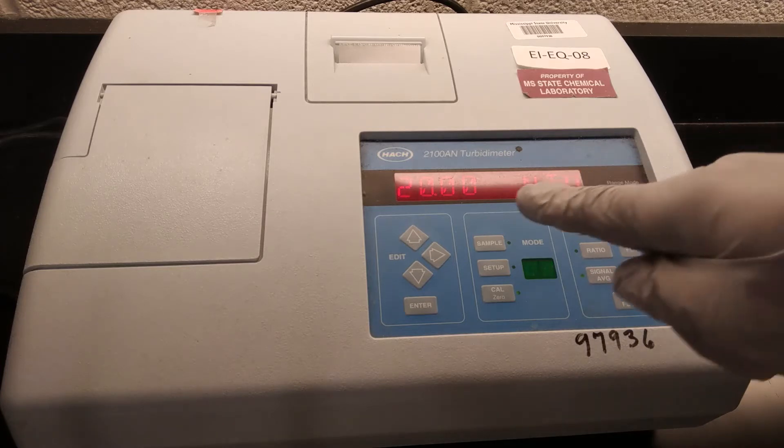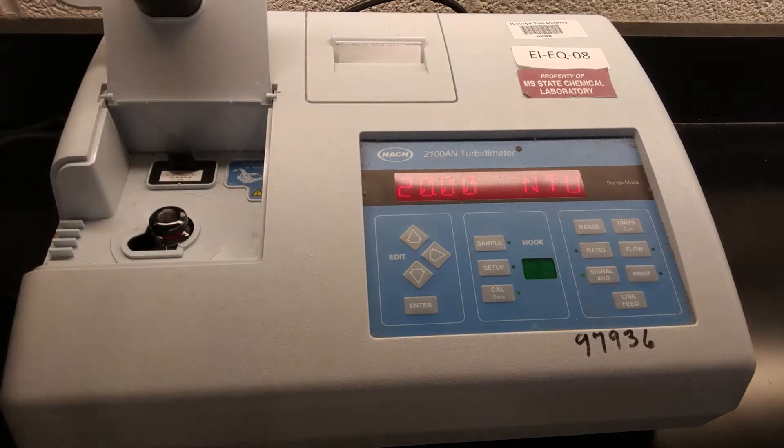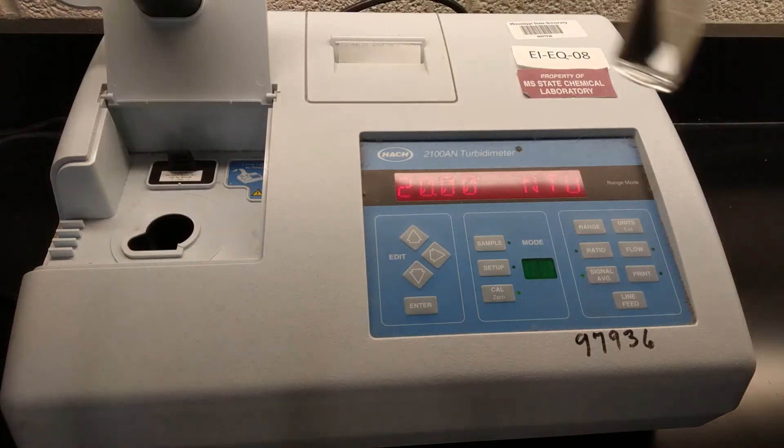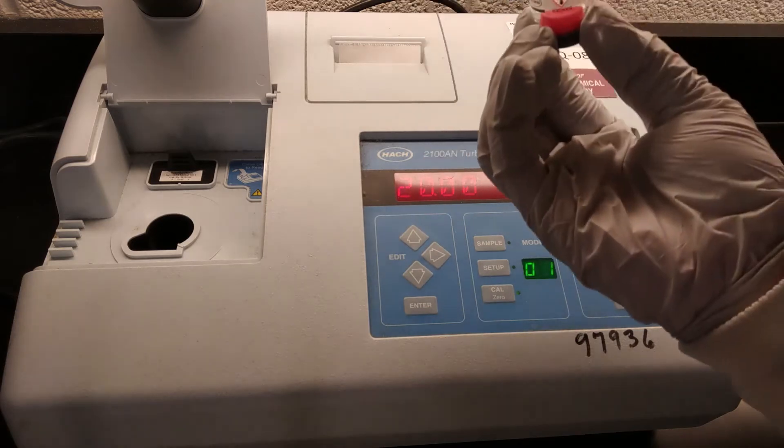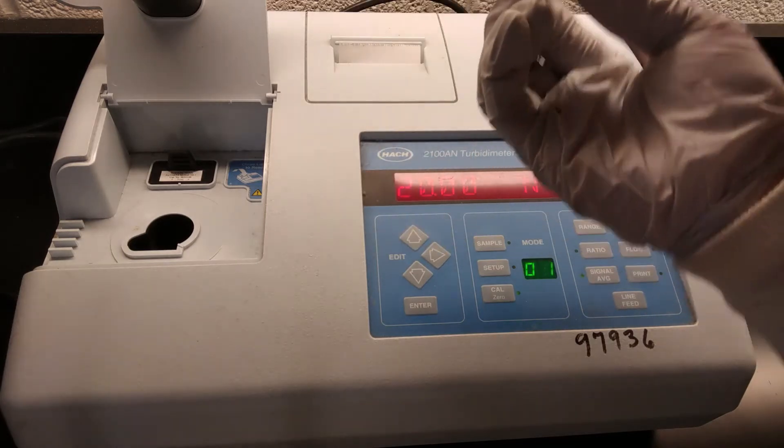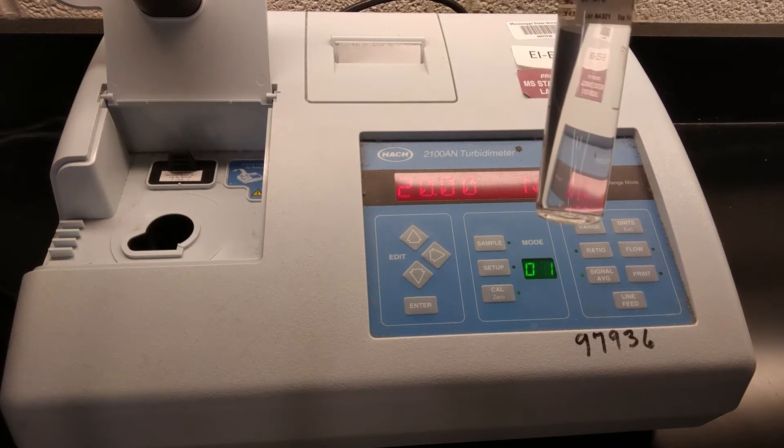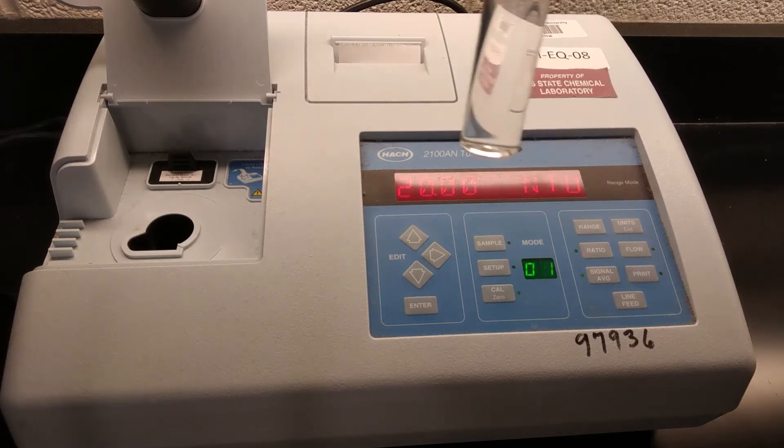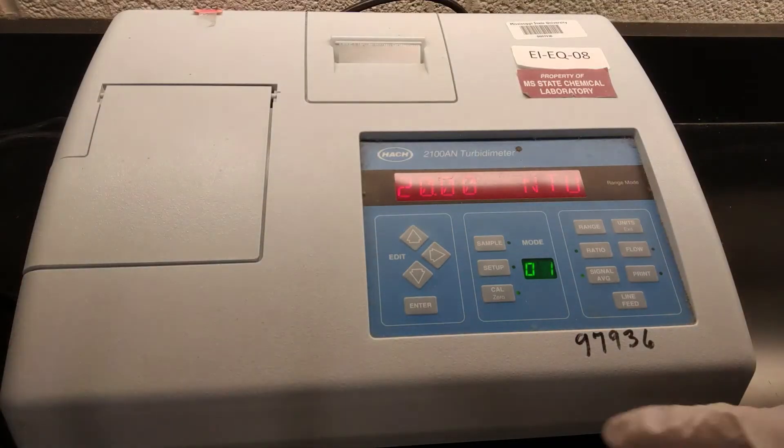Now you can see it's giving me the message 20.00 NTU. So that's what it's expecting. I'm going to take the less than 0.1 out, put that back in its case, and then I'm going to put in this 20 NTU standard. And actually when I took it out just now, it had some visible chunks in it. So I gave it a little bit of an inversion. Just shake it up and make sure that the suspended materials in there are all evenly distributed. So that's going to go in the cell. Close that and hit enter.